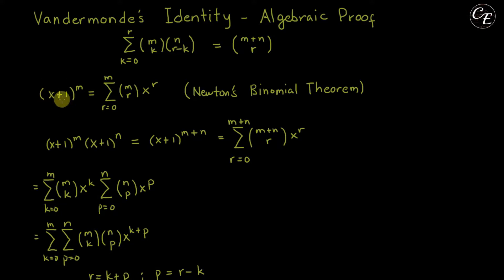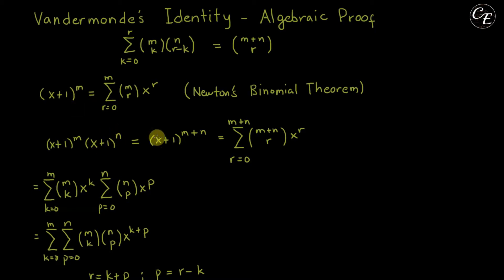We start with a term (x+1) raised to m, and another term with exponent n. By algebra, we can combine both these terms, so we get x plus 1 raised to the sum of m and n, which is m plus n.